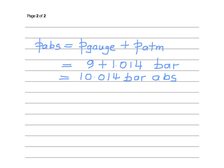In addition to the gauge pressure, we add the atmospheric pressure, which we got from the previous problem, to give us the absolute pressure, which is 10.014 bar absolute.